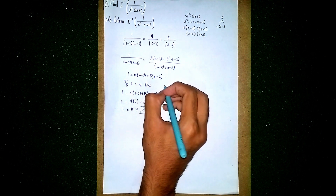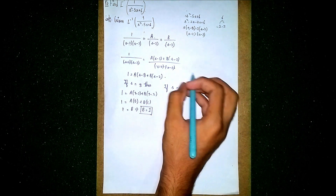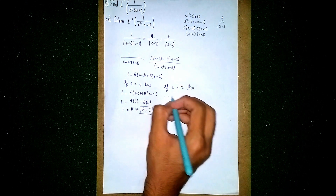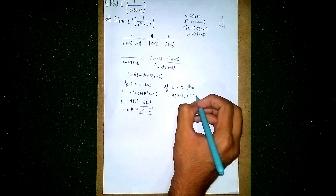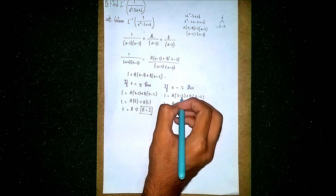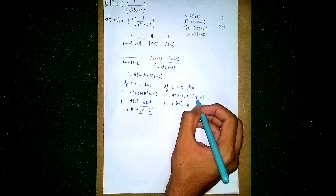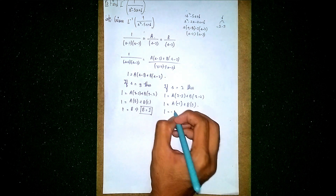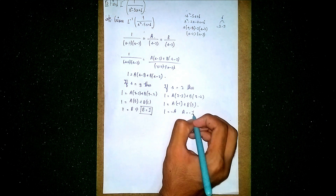Now, if s equals 2, then 1 equals A into 2 minus 3 plus B into 2 minus 2. So 1 equals A into minus 1, plus B into 0 — the B value is eliminated. So 1 equals minus A, therefore A equals minus 1.